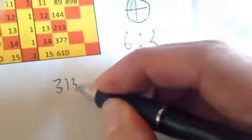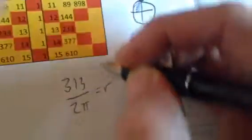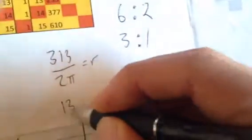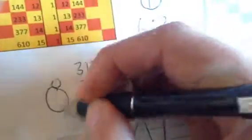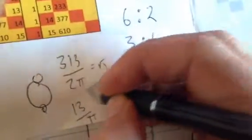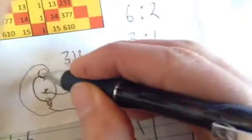Or your 313 over 2π is equal to R. Or your 13 over π is equal to R. For this, the Vesica Pisces, for your free energy of your coil. That's what it is. That's what Fibonacci is depicting.